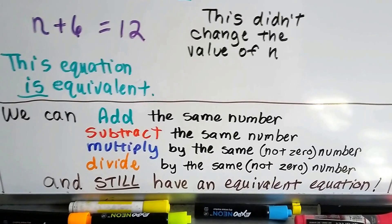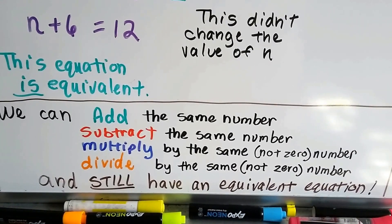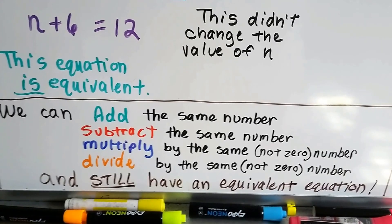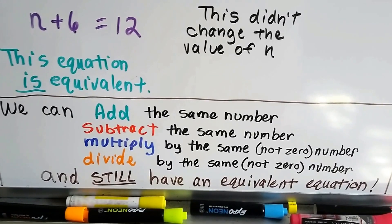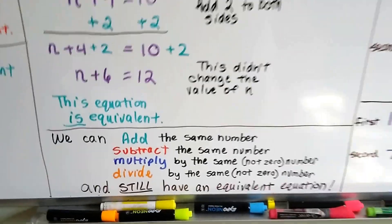We can add the same number. We can subtract the same number. We can multiply by the same number as long as it's not a zero number. We can divide by the same number as long as it's not a zero. And we'll still have equivalent equation.